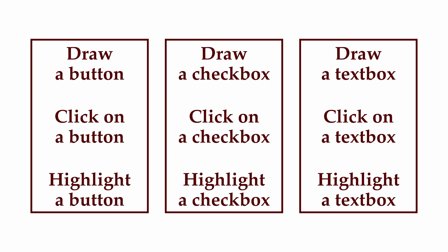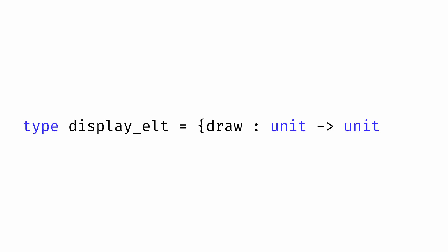We want to define a type for a displayable element that will include functions that operate on that element. We have a few different ways we can construct types that combine multiple values, and one of them is the record, which lets us combine multiple values by giving a named label for each. So we could define our type displayelt to be a record. For now, we'll let the record just contain a single field draw that contains a function for drawing the element, though we'll soon see that we could also add other functions to this record type too.